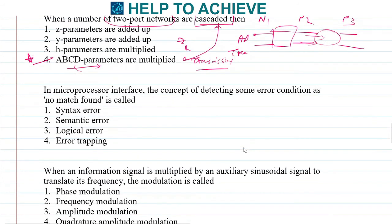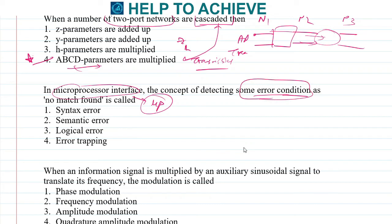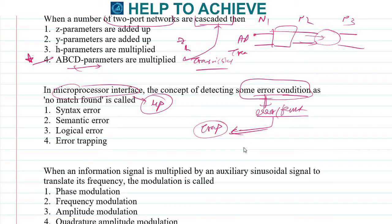Next: in a microprocessor interface, what is the concept of detecting error conditions such as a no-match fault? Whenever an error or fault condition occurs in a microprocessor, the program execution jumps directly to a trap and the fault is recorded. This trapping of error conditions is known as error trapping, which is the correct answer.